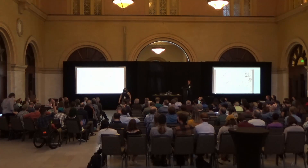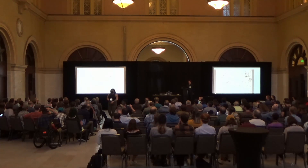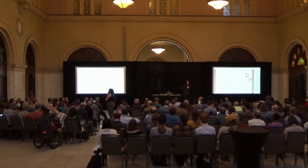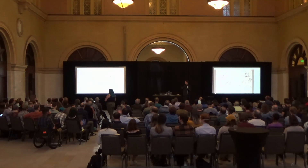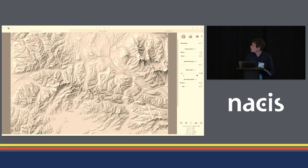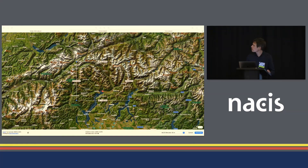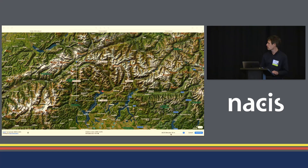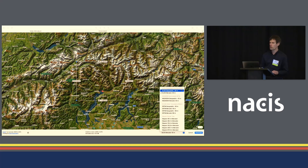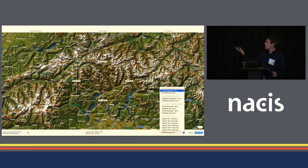I looked down for a second when you downloaded the data — where is that button, and does it come in Web Mercator projection when you download it? The button is here. The data is available in geographic projection and Mercator projection. When you export the file you can also reproject the grid and re-import it in another projection, so that's possible as well.